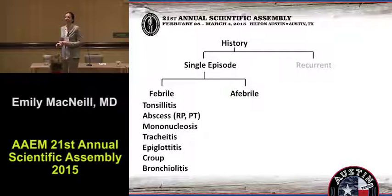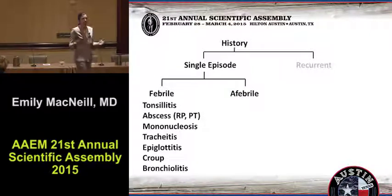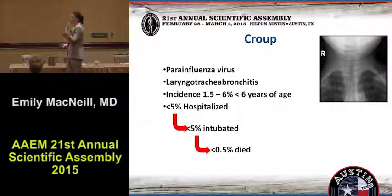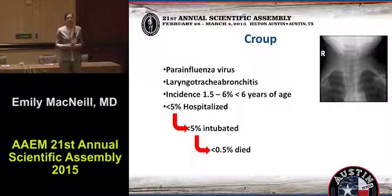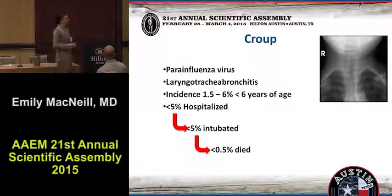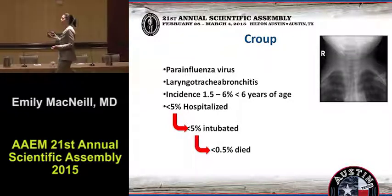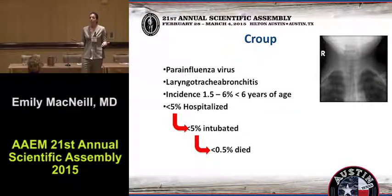Now we get to the single episode. These are the ones that make us a little bit more nervous. I break these into two groups: one is febrile or infectious, and the other is afebrile — which is essentially a foreign body. We have to talk about croup because it's the most common cause of noisy breathing. About one and a half to six percent of all children less than the age of six have had an episode of croup. Despite the fact that it's really common, it's actually usually not that bad — less than five percent of the kids you see are going to end up needing to come into the hospital, less than five percent of those kids are going to need to be intubated, and less than half a percent of those kids end up dying. Very common disease, but usually not very serious.